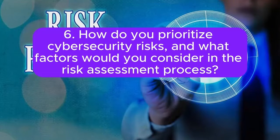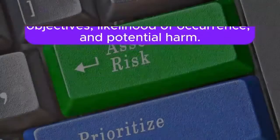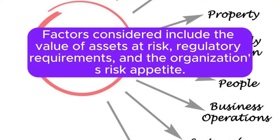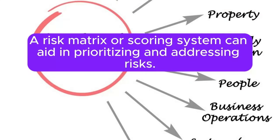Question 6: How do you prioritize cybersecurity risks? What factors would you consider in the risk assessment process? Answer: Prioritizing risks involves assessing their impact on business objectives, likelihood of occurrence, and potential harm. Factors considered include the value of assets at risk, regulatory requirements, and the organization's risk appetite. A risk matrix or scoring system can aid in prioritizing and addressing risks.